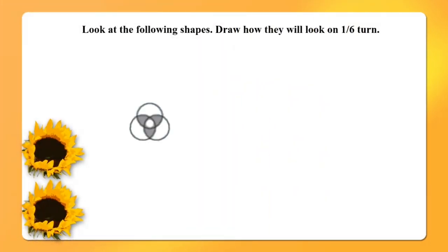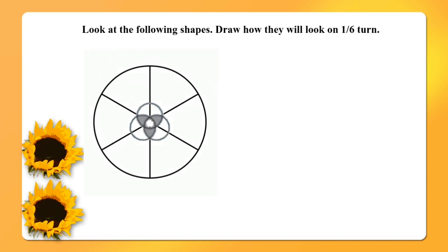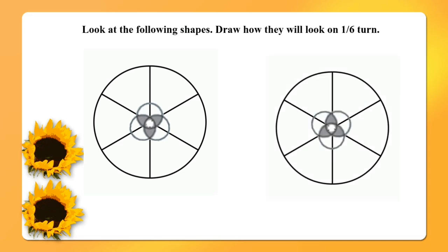Here you can see a figure with three circles interlinked with each other. For finding whether these three circles will look the same after one by six turn, draw a circle with six equal parts and place that figure on it. You will turn it from the topmost point to the next point. Here this part came to the side, so we can say this figure will look different after one by six turn.